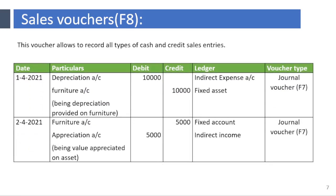Sales Voucher F8. This voucher allows you to record all types of cash and credit sales entries. For example: cash sales 5,000; sold goods to Mr. Sunil worth 95,000 on credit.